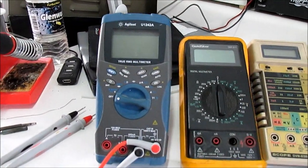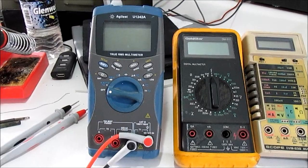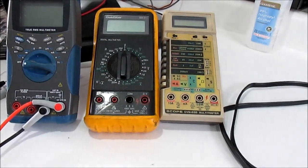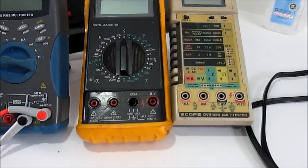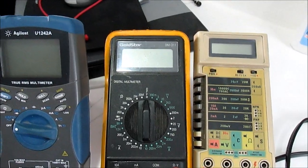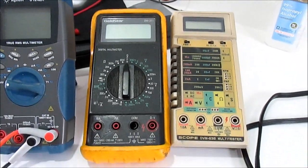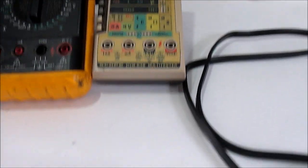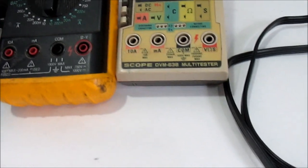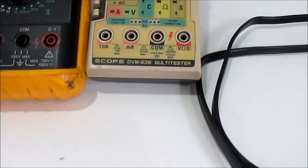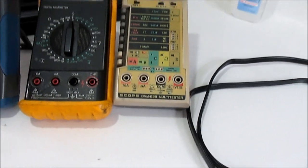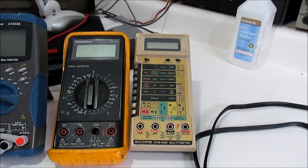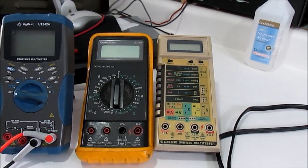What I have here is the Agilent U1242A from the prior video, and then I dug out a couple other meters to see what they do. The next one is this Gold Star DM311 that I've had since the 90s, kind of my garage meter. Then I have this off-brand Scope DVM 638 that I've had since 1985, actually my first meter I ever had. It's some unknown make from Taiwan that we got from a tool catalog long ago.